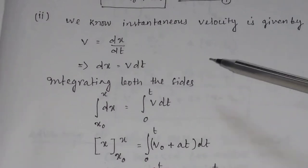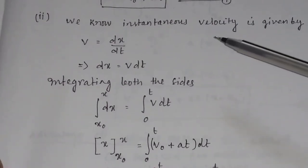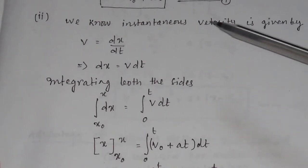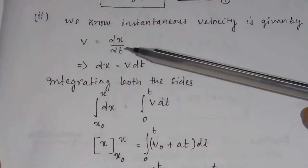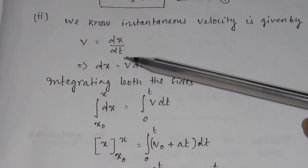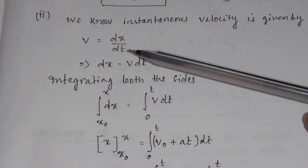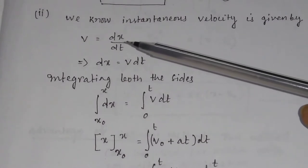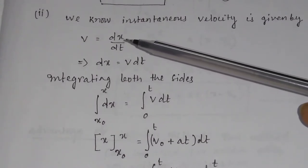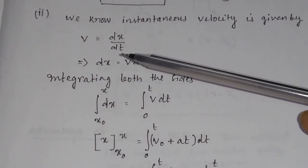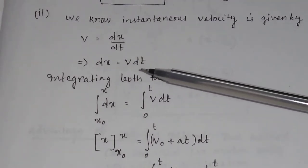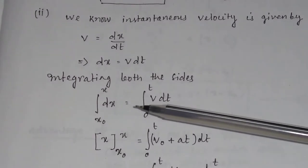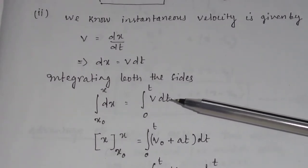Now we will deduce the second equation of motion using the calculus method. We know instantaneous velocity is given by V equal to dx by dt, that is the derivative of x with respect to t. So dx will be equal to V dt. Integrating both sides: integration of dx equals integration of V dt.